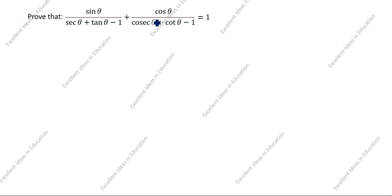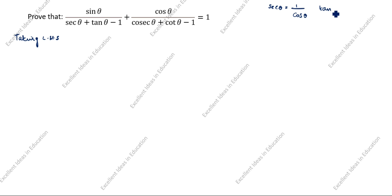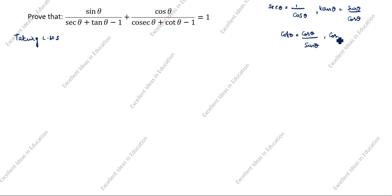We will prove LHS equal to RHS. First, we will take LHS. The formula for secθ is 1/cosθ. The formula for tanθ is sinθ/cosθ. The formula for cotθ is cosθ/sinθ. The formula for cosecθ is 1/sinθ. These are the formulas we will use.